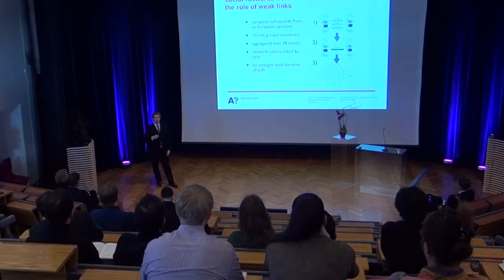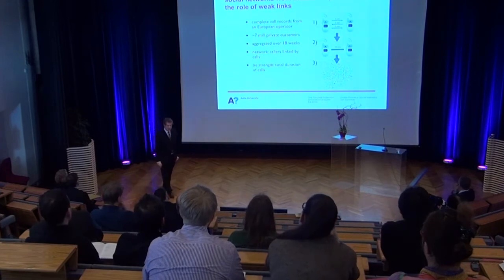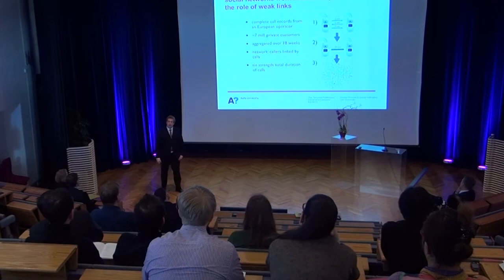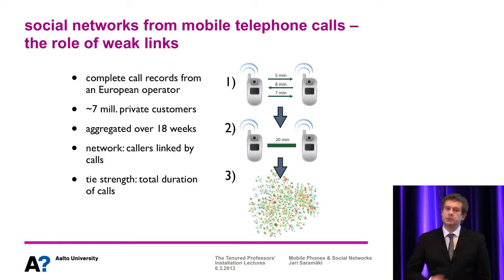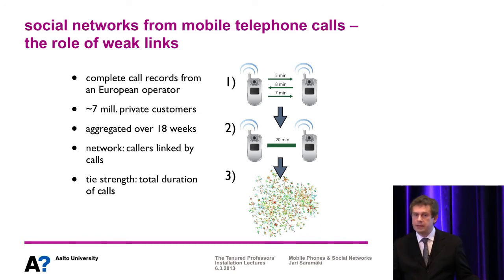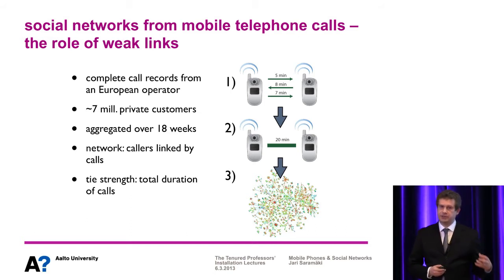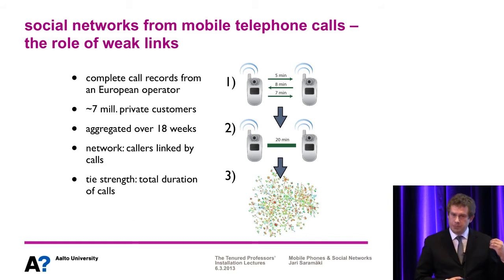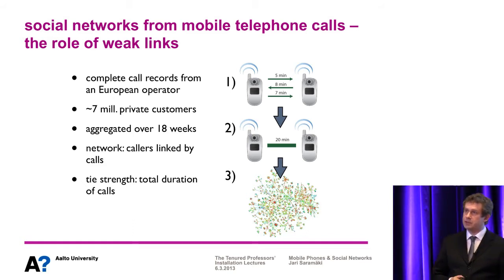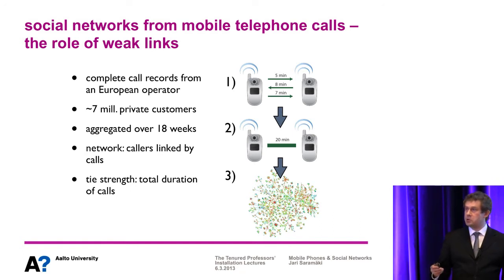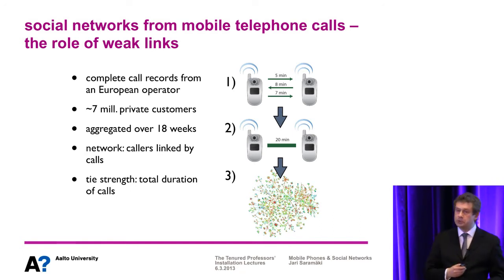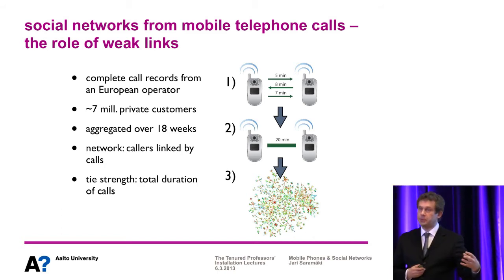Next I'll walk you through some of my earlier studies related to mobile phones and social networks. Going back six or seven years, this was the first study that my group did related to mobile telephone calls. What we wanted to do was to investigate the role of weak and strong social ties in networks. We had access to complete call records from a European mobile telephone operator with 7 million customers over 18 weeks — fully anonymized, so we didn't know the identities of the callers, but we knew that person A called person B for 20 minutes during this time.